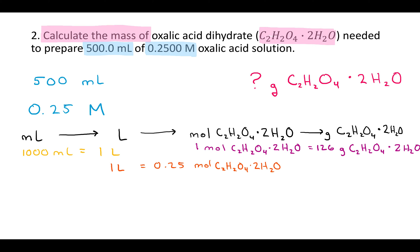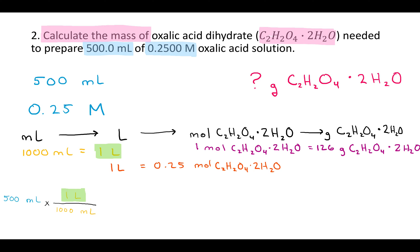Now I take the simple number they gave me — the number whose units I couldn't break down — that's 500 milliliters. Every time you do a conversion, you write a multiplication sign, a fraction bar, and the units you have on top go on the bottom so they'll cancel out. Here that's milliliters. I fill this fraction in with my conversion factor: 1,000 goes next to milliliters on the bottom, and 1 liter goes on top. Milliliters cancel out and I'm left with liters.